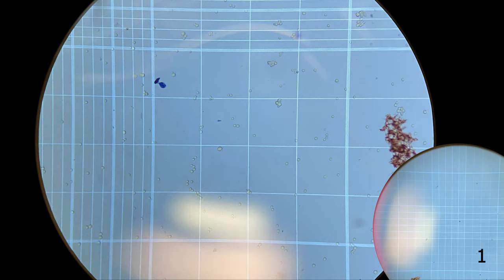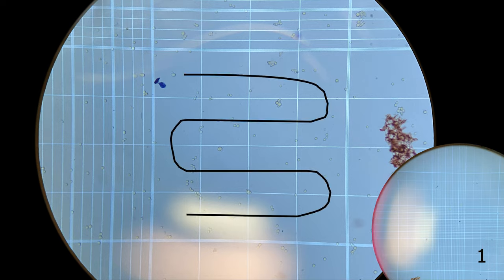To do that, we'll start in the top left-hand corner, moving back and forth, count the number of cells in each square, like this.